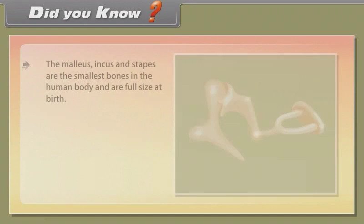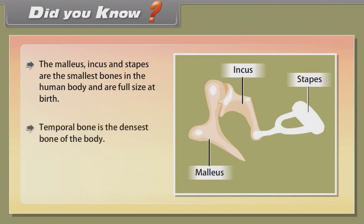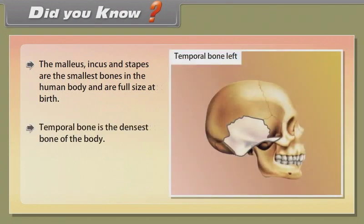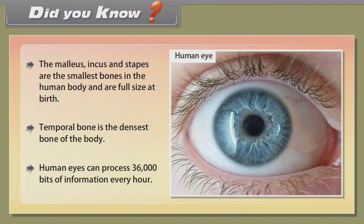The malleus, incus, and stapes are the smallest bones in the human body and are full size at birth. The temporal bone is the densest bone of the body. Human eyes can process 36,000 bits of information every hour.